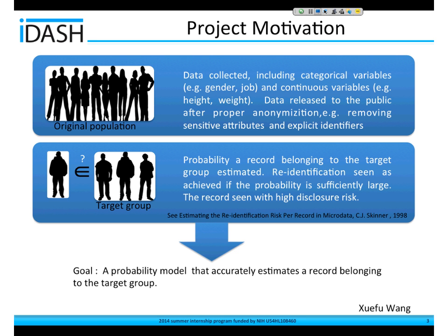What motivates our project is that sometimes when we do medical research, we collect data. This kind of data contains categorical variables and continuous variables. Before we release this kind of data, we have to remove the sensitive information or the explicit identifiers. And once the data is released, intruders like hospitals or insurance companies would want to match their client's record to a target group in this dataset. If the probability that they can match the record to this target group is high, that means this person's record can be easily identified, and that puts this person at a really high risk.